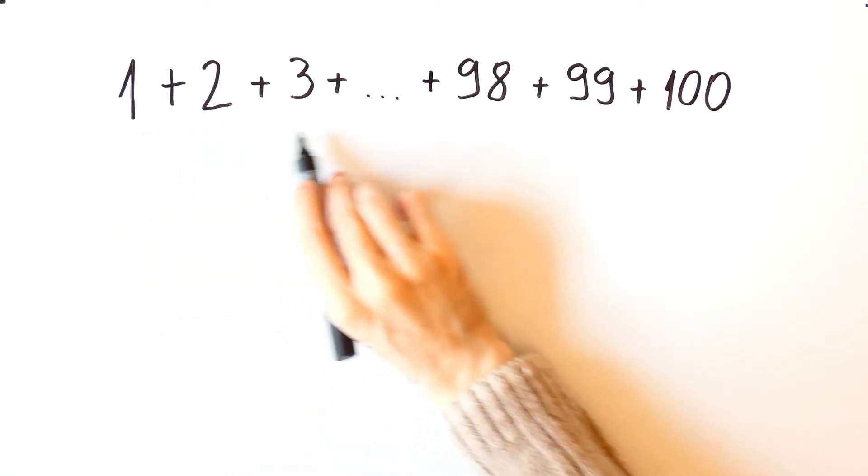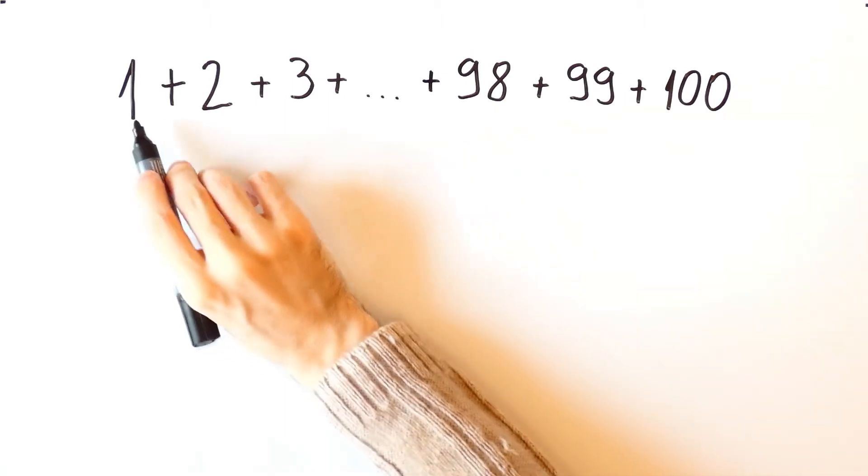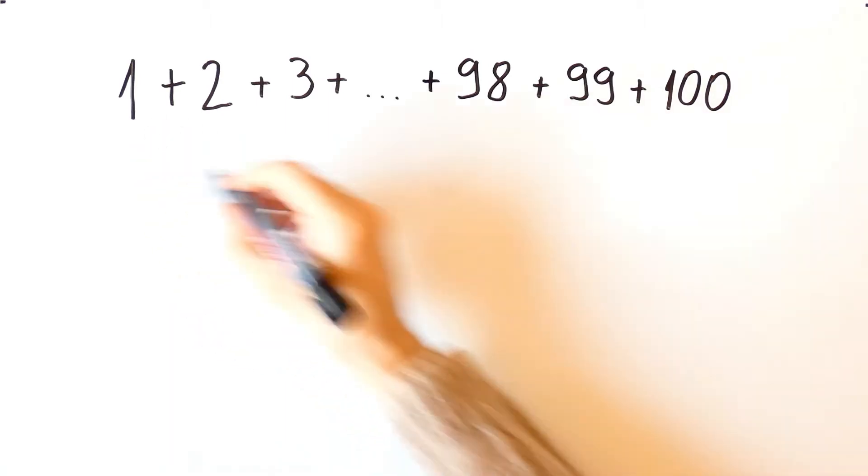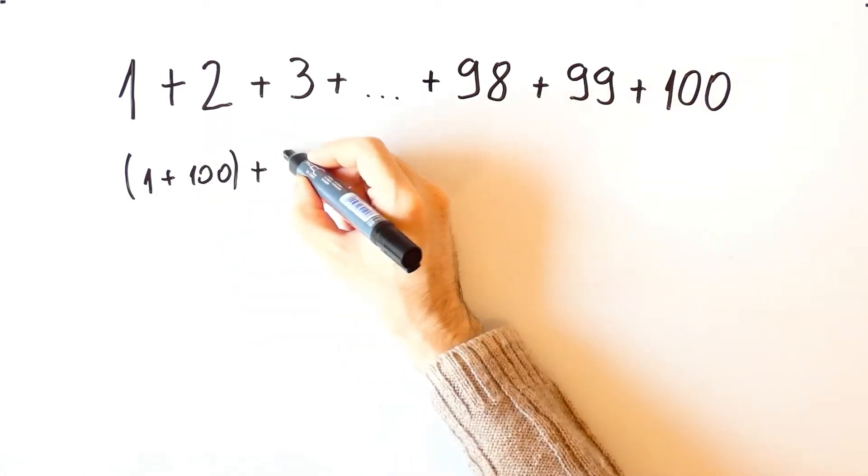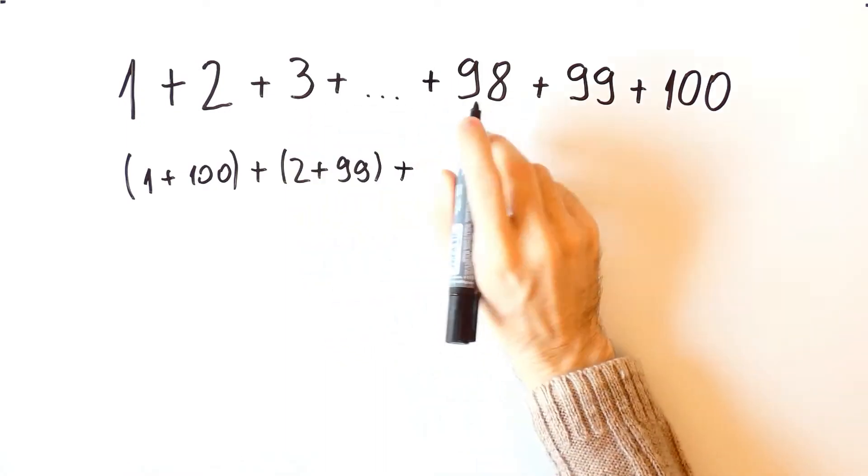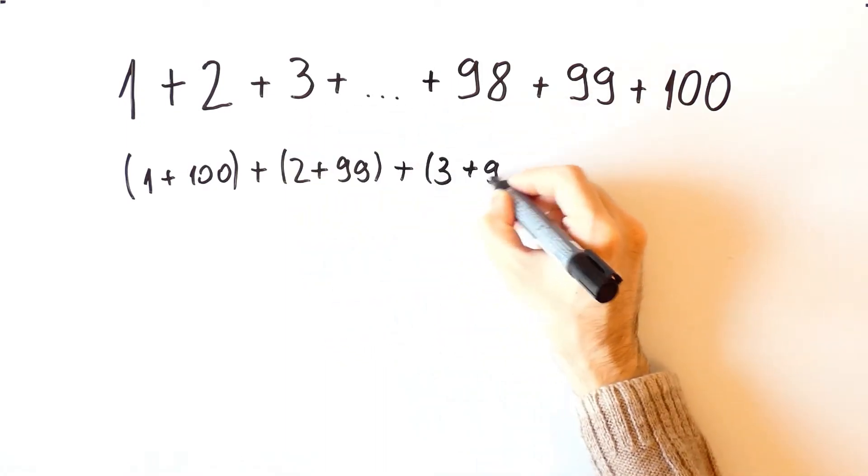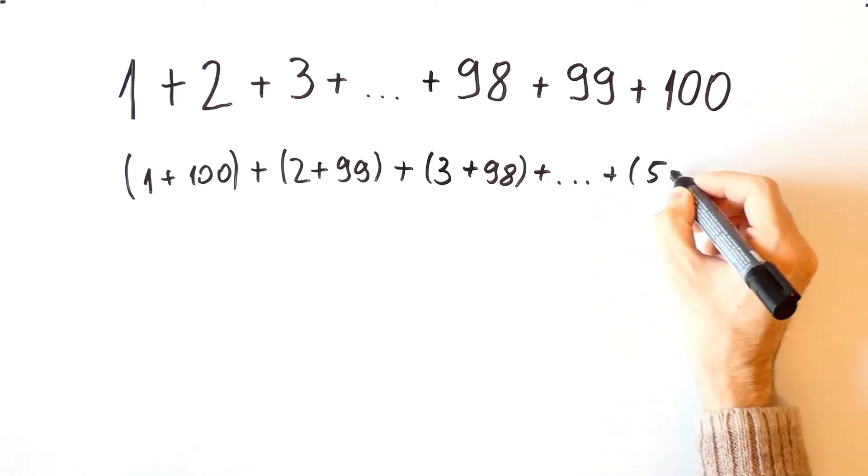So another way to add all these numbers is to rearrange the terms in the following way: 1 plus 100, plus 2 plus 99, plus 3 plus 98, and all the way to 50 plus 51.